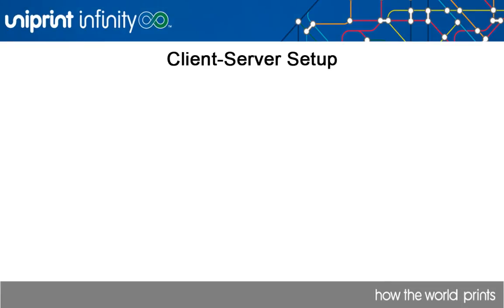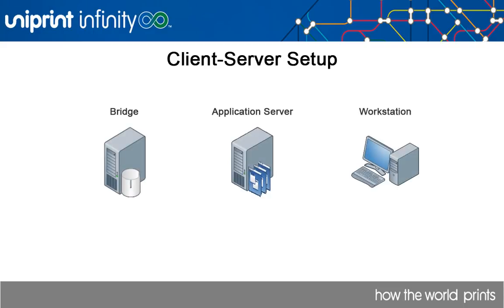In this video, we're going to install Uniprint Infinity for a client-server environment. For this demonstration, we've set up three virtual machines so that we can switch back and forth between them. On the first server, we're going to install the Uniprint bridge. The bridge installation also installs the license server and the Printpal server. Keep in mind that only one instance of the license server can exist in a Uniprint environment. On our Remote Desktop Services or Citrix XenApp server, we're going to install the Uniprint application server, which also contains the Uniprint Universal printer driver. On our workstation, we'll then install the Uniprint client.